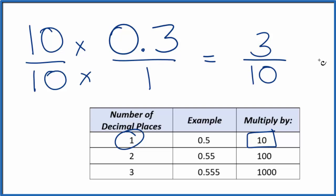10 times 1 is 10, and we end up with the fraction 3 over 10. And we can't reduce this fraction any further. So 0.3, the decimal, that's equal to the fraction 3 tenths.